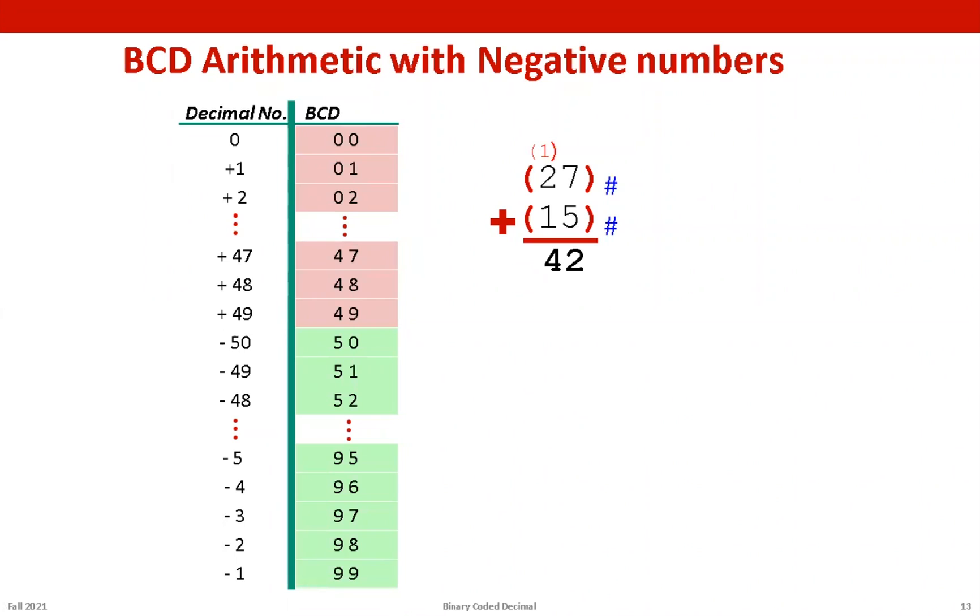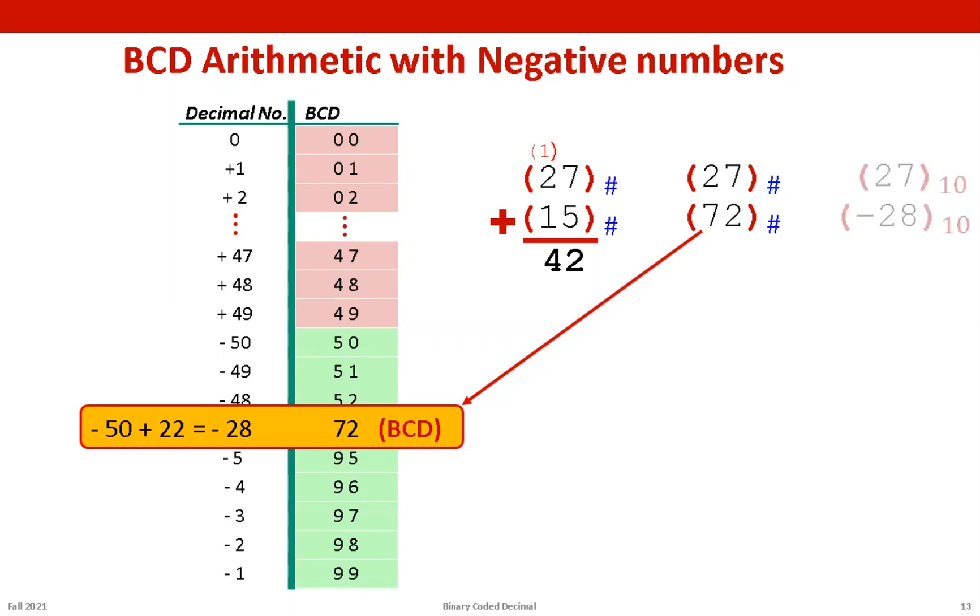Let's solve one more example. Let's say we have 27 and 72. Now this time one of the numbers, that is 72, is greater than 50, so we need its computation in BCD and that lies somewhere here: -50 plus 22 is equal to -28. So 72 in BCD corresponds to -28 in decimal. When we add 27 with -28 we get -1. And when we add these numbers in BCD representation, we get 99, and that exactly corresponds to -1. Hooray, it worked! But would BCD representation also work with subtract operations as well? Let us see.